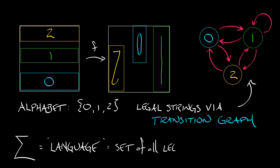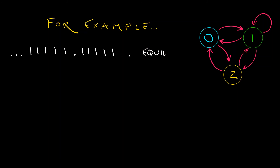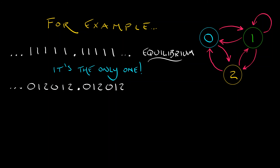Capital Sigma is the set of all legal bi-infinite strings that can be realized as directed paths on this transition graph. For example, I can look at the string that is just all ones — this corresponds to an equilibrium, invariant under the shift map, and it's the only equilibrium in this invariant set. Now consider the itinerary 0, 1, 2, 0, 1, 2, 0, 1, 2, ... repeated bi-infinitely. This is, of course, a periodic orbit of period three. Is this legal? Yes — it traces out a valid path in the directed transition graph.